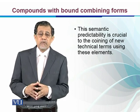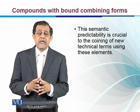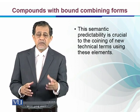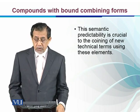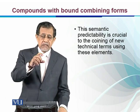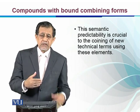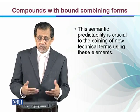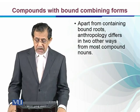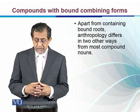This semantic predictability is crucial to the coining of new vocabulary. If we are not aware of this semantic aspect, we cannot understand the words. With the help of simple morphemes like 'anthro' and 'ology' — meaning study of — we can easily determine their meanings.